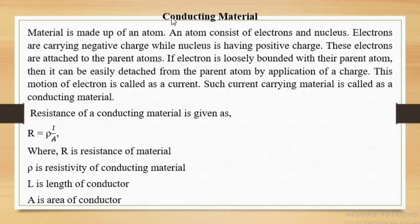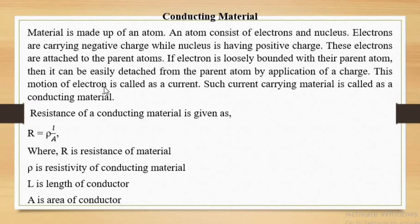First, what is meant by conducting material? Material is made up of atoms, and atoms consist of electrons and nucleus. Electrons carry negative charge while the nucleus carries positive charge. The electrons are attached to the parent atom. If an electron is loosely bounded with its parent atom, it can be easily detached by application of a charge. This motion of electrons is called current, and such a current-carrying material is called a conducting material.